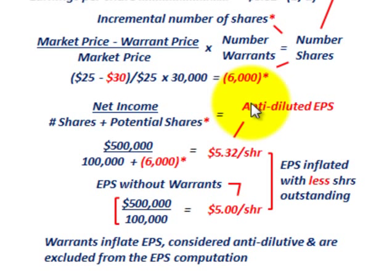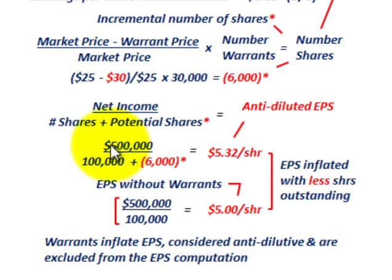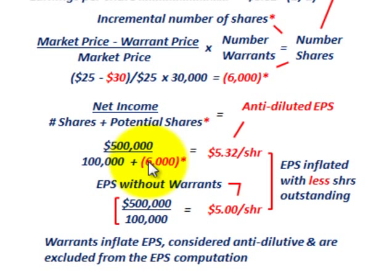To determine our anti-dilutive earnings per share, we take net income for the year and divide it by the average number of common shares outstanding plus those potential shares that would be exercised based on those warrants. We had net income of $500,000 and average common shares outstanding of 100,000. Adding in those potential shares of negative 6,000, the difference gives us 94,000. Dividing $500,000 by 94,000 gives us $5.32 per share.